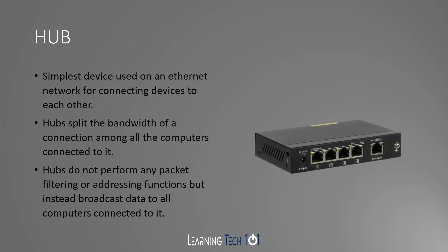The first device we have is the hub. This is going to be the simplest of devices that are used on an Ethernet network for connecting devices together. Your hubs split the bandwidth of the connection among all the computers connected to it. So whatever your max bandwidth speed for that hub, however many devices are connected to it, it's split between them.